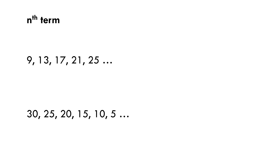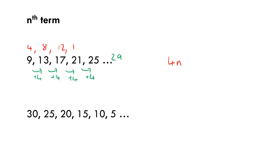Here are a couple of arithmetic sequences where we want to find the nth term. This sequence increases in fours. I could find the next term, but for something like the hundredth term it's trickier. The most famous sequence that increases in fours is the four times table, represented as 4n. But this isn't the four times table, so I need to find the link. Using the zeroth term method — working backwards — taking away four gives us 5. So the nth term rule is 4n + 5.